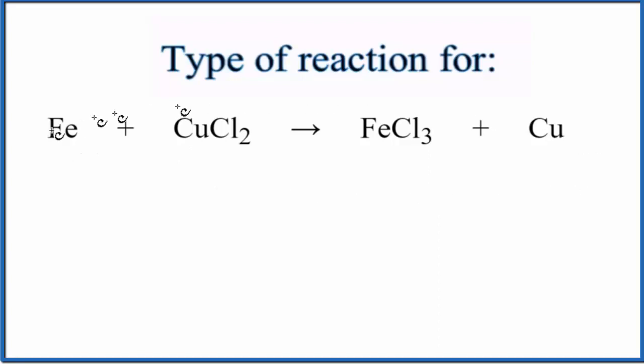When I look at the equation, I see a metal, iron, all by itself on this side, and then on the products, copper is all by itself. That makes me think this is going to be a single displacement reaction.